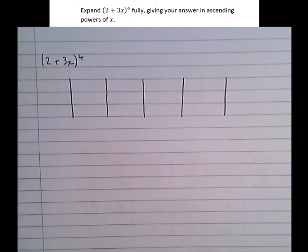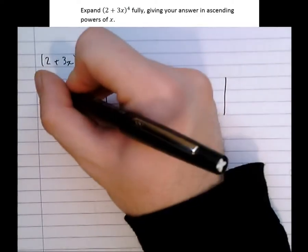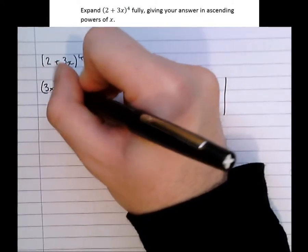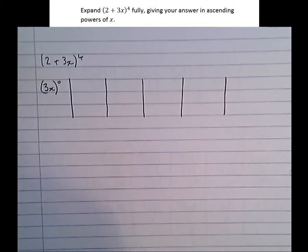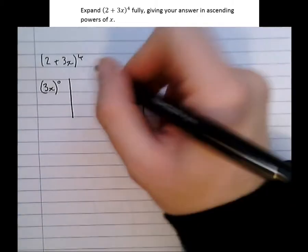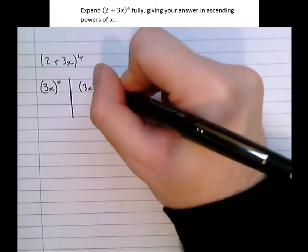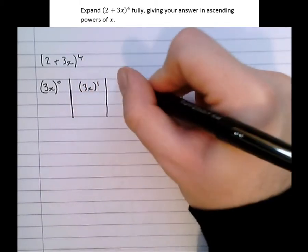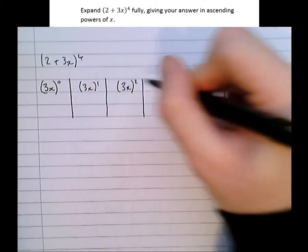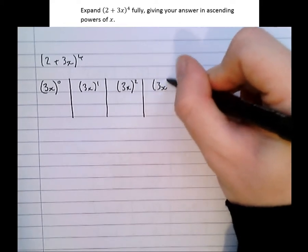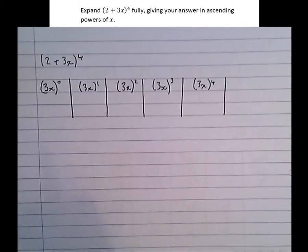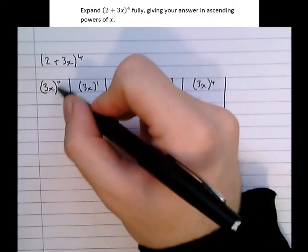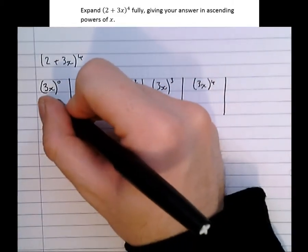The lowest power of x is (3x) to the power of 0. It's important to put brackets around the 3x term, because it's all of that 3x that's raised to the power. Then the next highest powers: (3x) to the 1, (3x) all squared, (3x) all cubed, and (3x) all to the power of 4. So we've done the powers of x; now let's do the powers of 2.